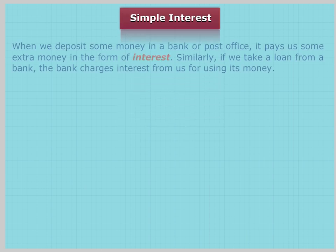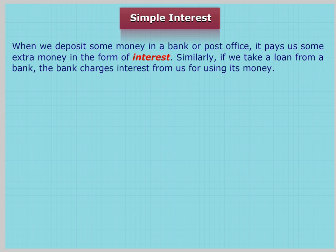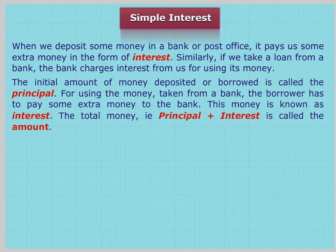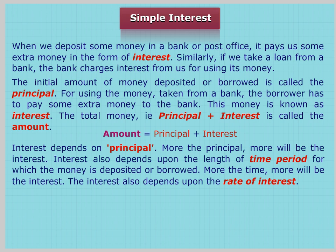Simple Interest: When we deposit some money in a bank or post office, it pays us some extra money in the form of interest. Similarly, if we take a loan from a bank, the bank charges interest from us for using its money. The initial amount of money deposited or borrowed is called the principal. The extra money paid to the bank is known as interest. The total money — that is, principal plus interest — is called the amount. Amount equals principal plus interest. More the principal, more will be the interest.